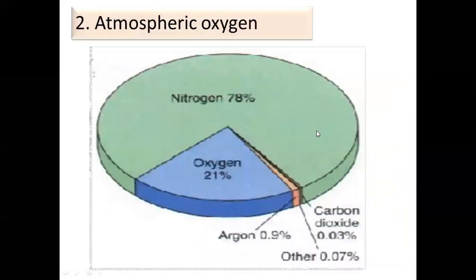Next, atmospheric oxygen. Atmospheric oxygen refers to the abundance of molecular oxygen in the atmosphere, especially in the troposphere, that allows life to flourish. It is the most important need of humans, even more important than food, making up 21% of the atmosphere.